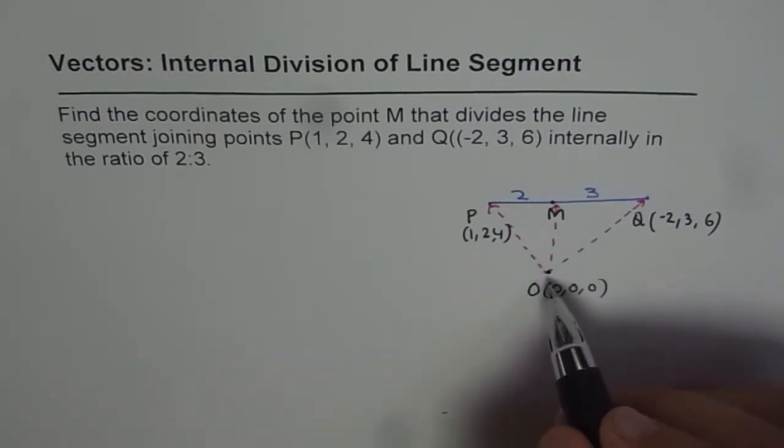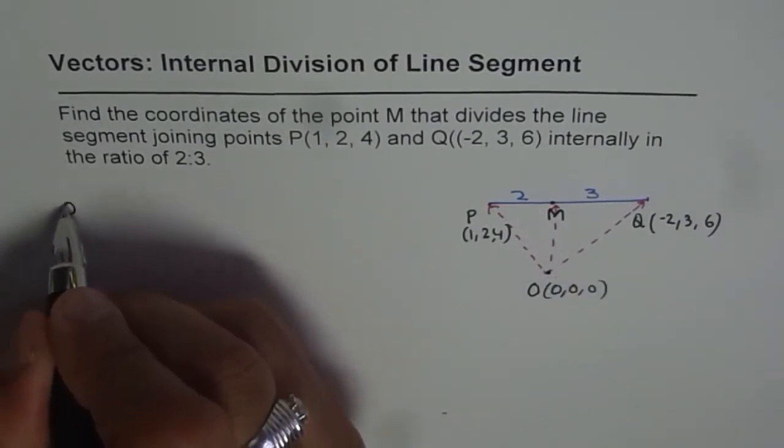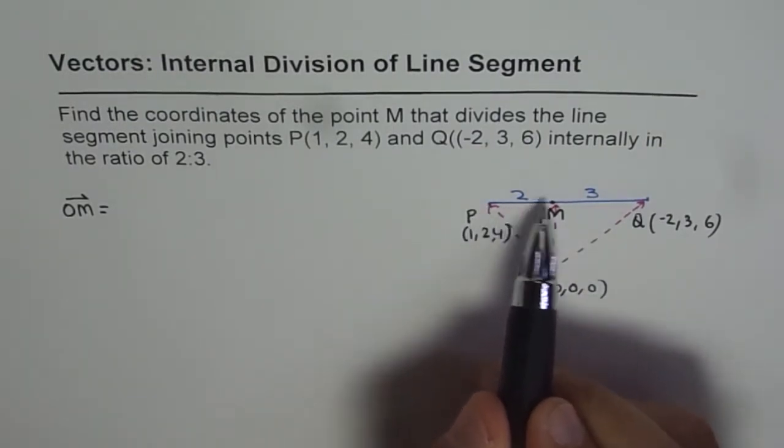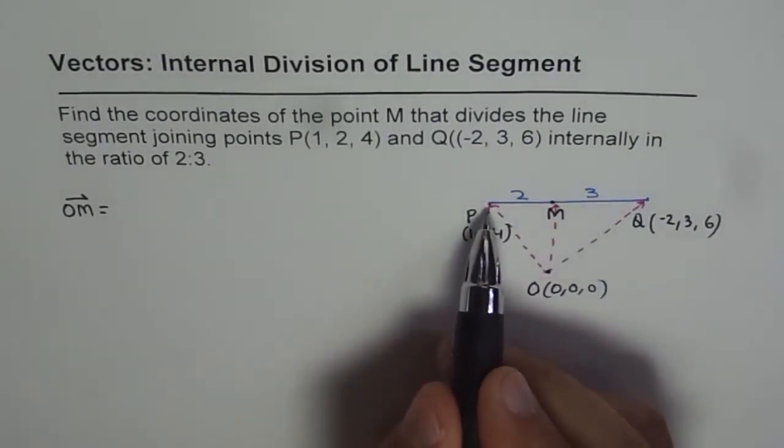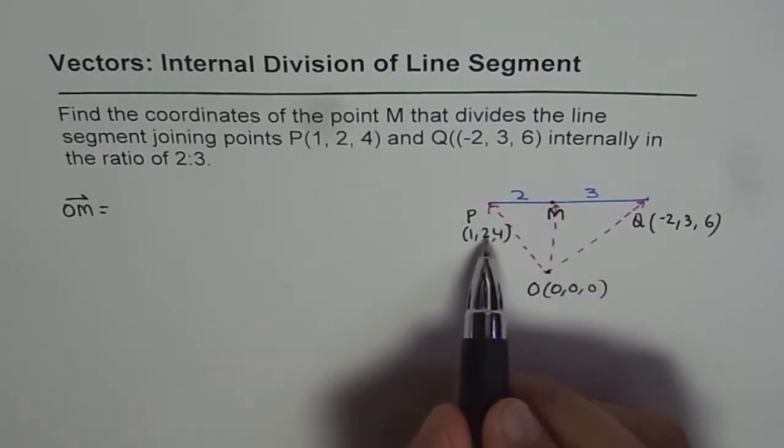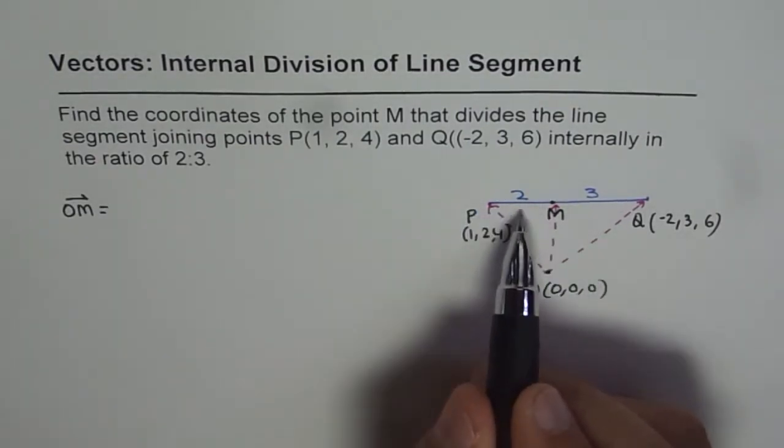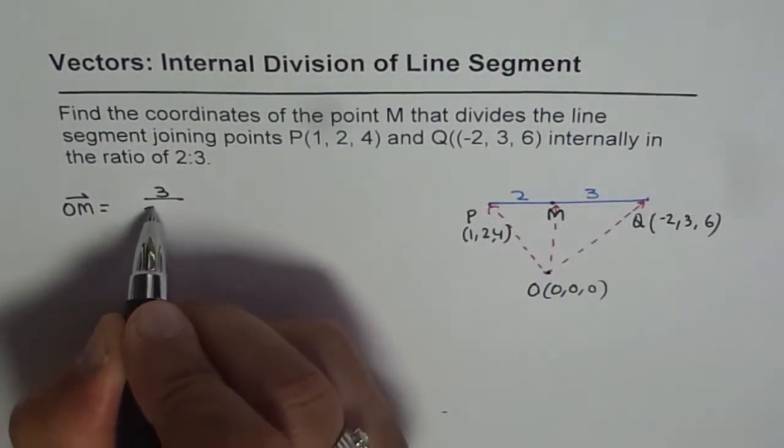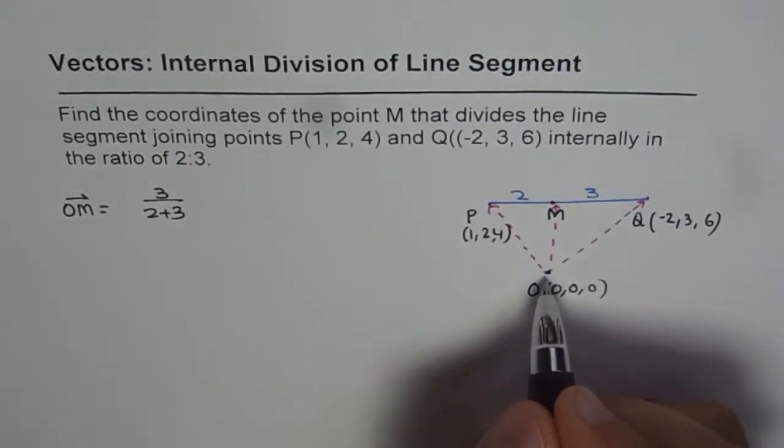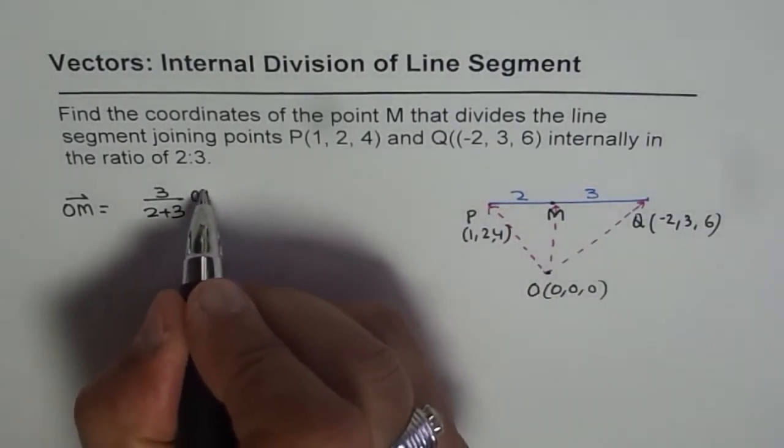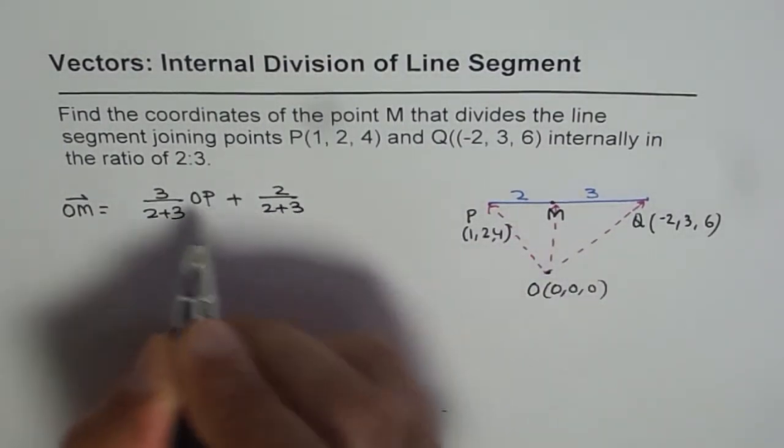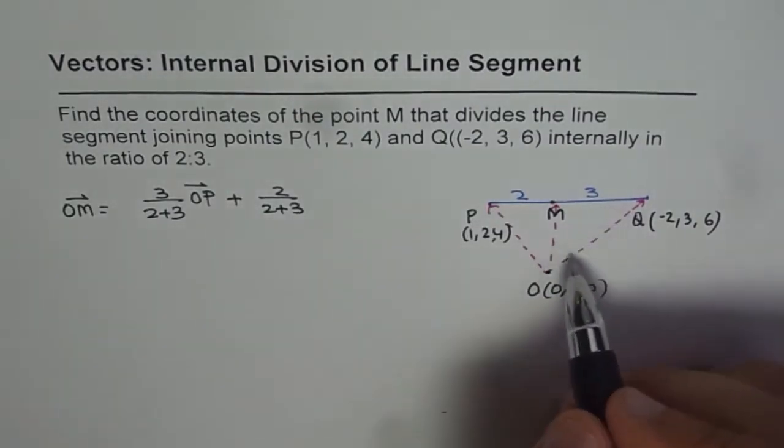Now what is OM equal to? From the formulas which we have derived, we can say OM equals, for this ratio of 2:3, it is 3/(2+3) times OP plus 2/(2+3) times OQ.